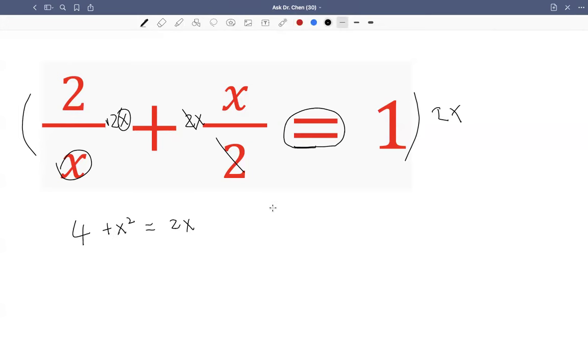So I don't have denominators anymore. I have a quadratic equation actually. I have x squared minus 2x plus 4. Now I want to write the terms in order: degree 2, degree 1, degree 0.